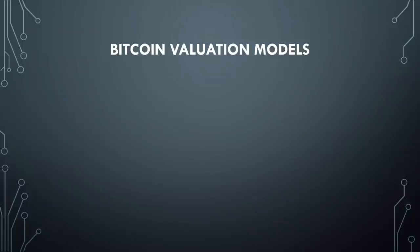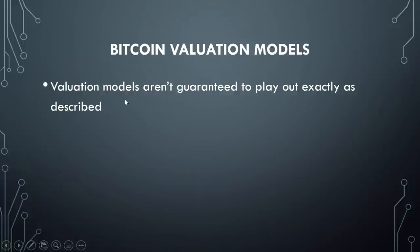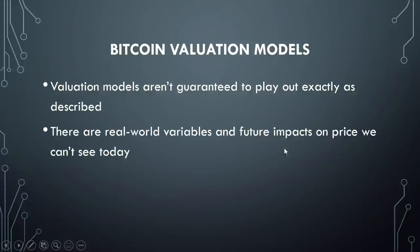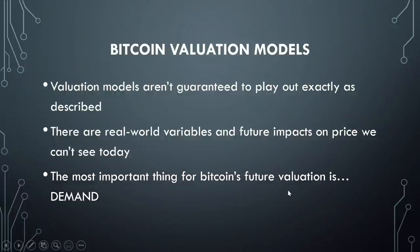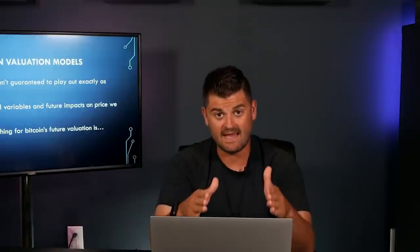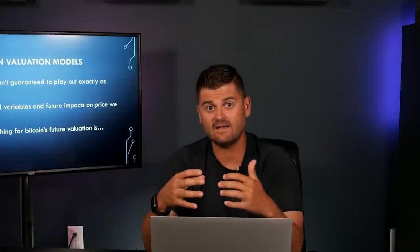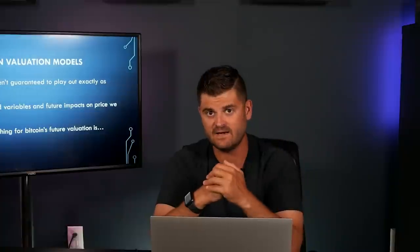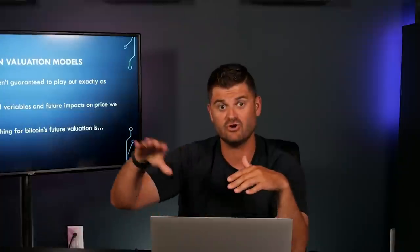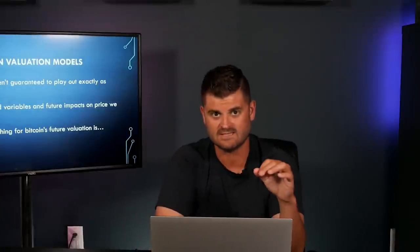Before we wrap up, just a few thoughts to keep in mind. Valuation models are not guaranteed to play out exactly as described — they're just models. There are real-world variables and future impacts on price that we just can't see today. In the future, we're going to have events that we can't predict — like COVID, which was actually a very bullish event for Bitcoin and helped open a lot of people's eyes to the need for sound money. The most important thing for Bitcoin's future valuation is demand. If there's strong demand for Bitcoin in the future because of its fixed supply, the price can only go one direction: up. If something disrupts the growth of Bitcoin, the price could fall. And in between, as we've seen, Bitcoin's price is extremely volatile because it is so speculative, so new, and it's disrupting the global financial system.